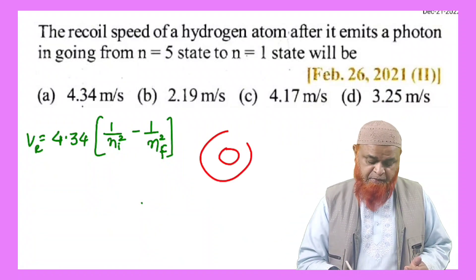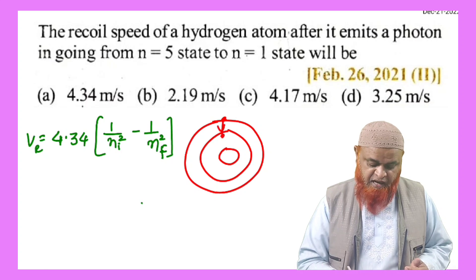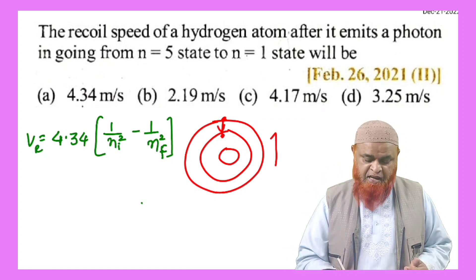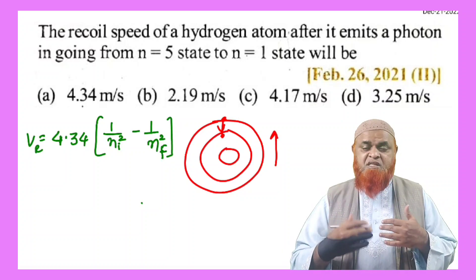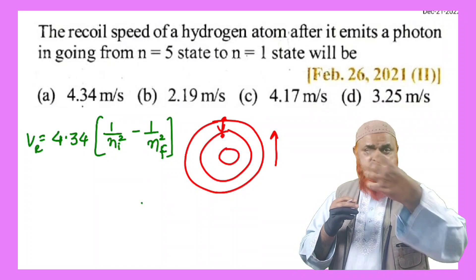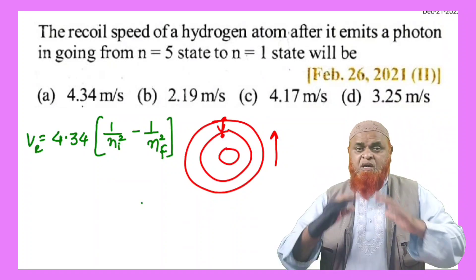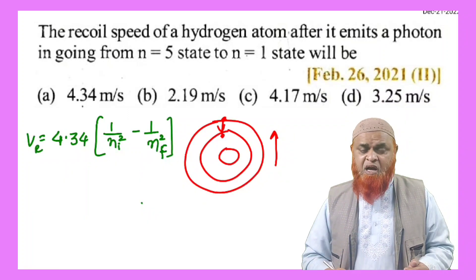For example, if you consider an atom in which electron transition takes place from higher energy level to lower energy level, then what happens is the atom will recoil. That means just like when a bullet comes outside, the gun will recoil back. When electron falls down, even the atom also recoils.